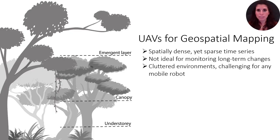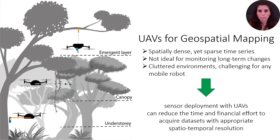UAVs have been used effectively for geospatial mapping above forests, volcanoes, and coastal areas. Their use for environmental monitoring in these landscapes generates especially dense yet sparse time series, often not ideal for ecological studies that monitor long-term changes to the environment. Hence the need to perform frequent flights, which increases the costs and manpower needed for such studies. The capability to deploy sensors from UAVs can significantly reduce the effort of acquiring datasets with appropriate spatiotemporal resolution, as the deployed sensor can complement spatially dense UAV data with temporally dense data.